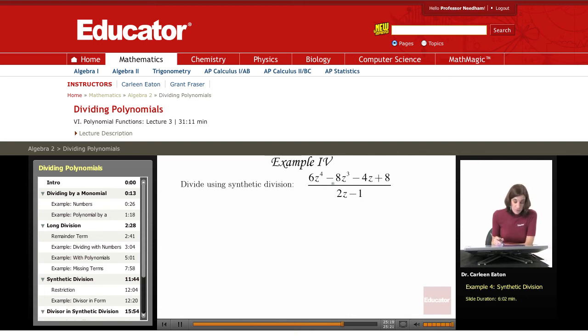I've got a missing coefficient and this is not in the correct form of x minus r. So dealing with the missing coefficient, I have a missing term which I'm going to represent with the coefficient of zero.